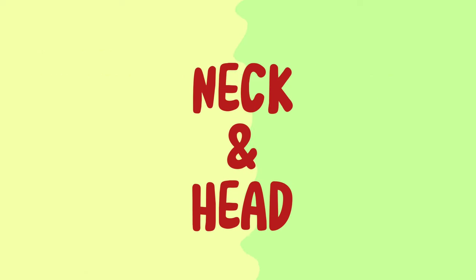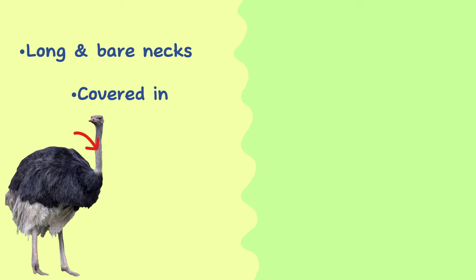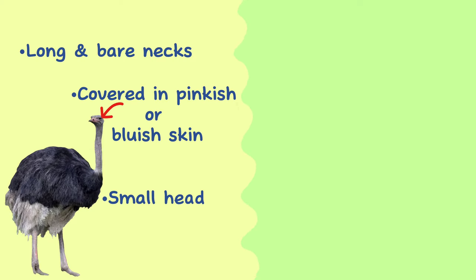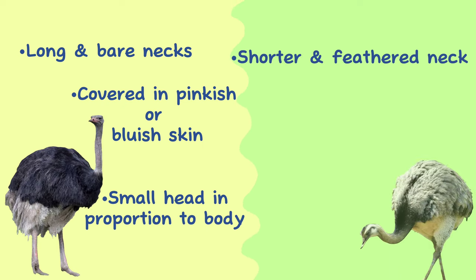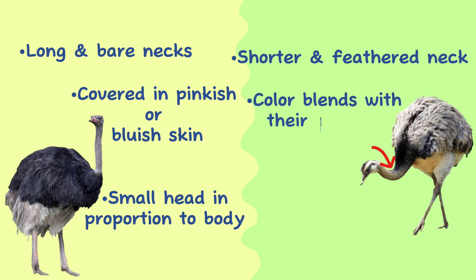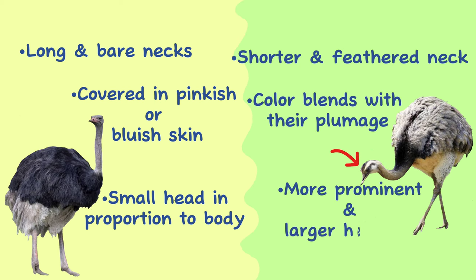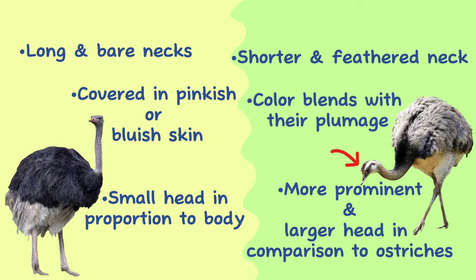Neck and Head. Ostriches have long, bare necks that are mostly covered in pinkish or bluish skin, and their heads are relatively small in proportion to their bodies. Rheas have a shorter, feathered neck that blends more seamlessly with their plumage, and their heads are more prominent and appear larger in comparison to ostriches.